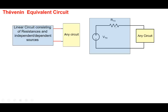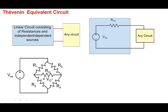One part can have five independent sources, four dependent sources, ten resistors — all of that can be replaced by a single voltage source and a single resistor. In what sense? In terms of terminal current-voltage characteristics. If a current of 1 mA was flowing somewhere, after replacing the part with VTH and RTH, the same current continues to flow. The terminal behavior is identical.